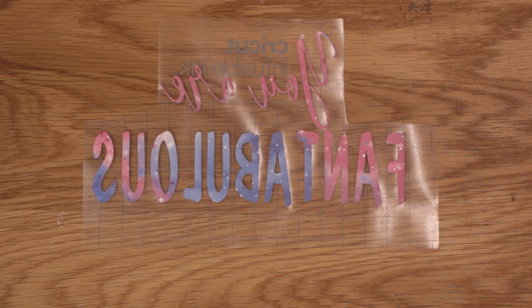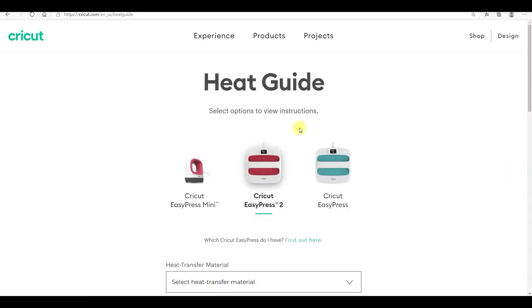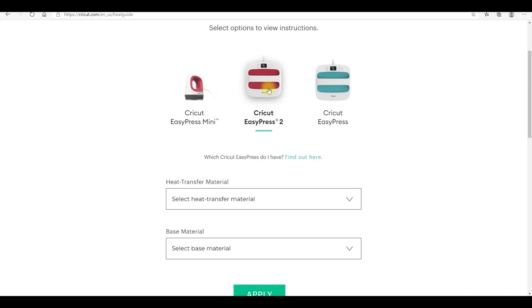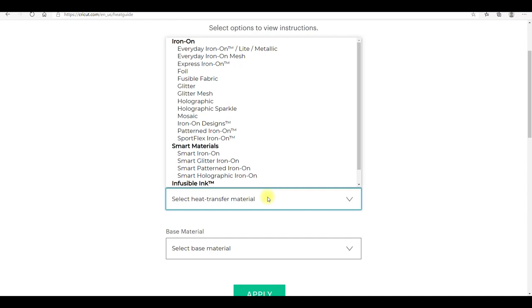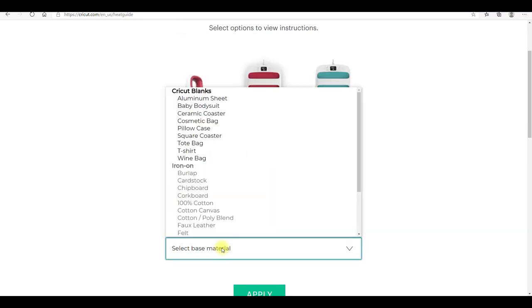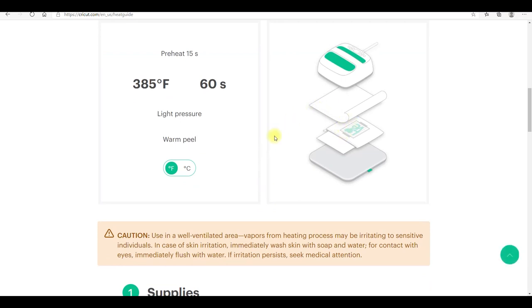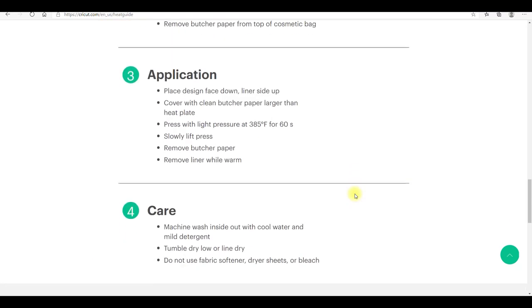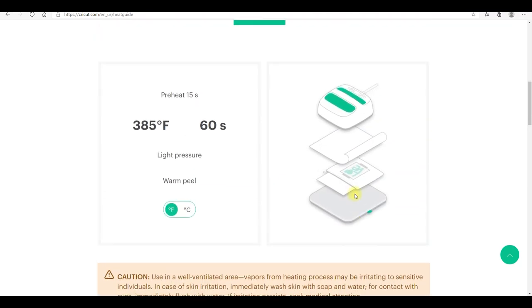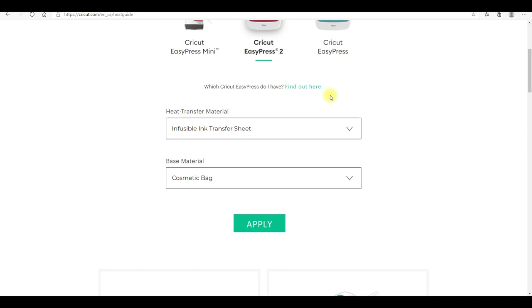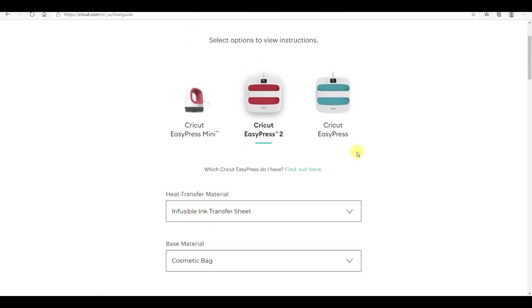So we're at the Cricut heat guide. So we're at the Cricut heat reference site. This is fantastic. It is invaluable to you. So the first thing you're going to do is choose your EasyPress. So I'm choosing this one, EasyPress two. I am using infusible ink sheets. And it is going on a cosmetic bag. And then I can click apply. And it's going to give me all the information I need. So as well as pressure, temperature, time, it's a warm peel. It's going to tell me how I put it all together. And it's going to give me lots of written instructions as well. So please, please make sure that when you are using pretty much all your iron-on and your infusible ink, that you come onto the reference guide because it is your best friend.